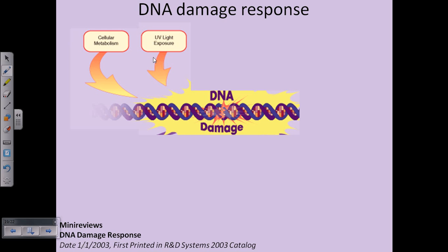UV radiation can actually form thymine dimers. The thymine dimer creates a kink in the DNA, and as a result that bulged section of the DNA will no longer be replicated properly or transcribed properly due to this thymine dimer.